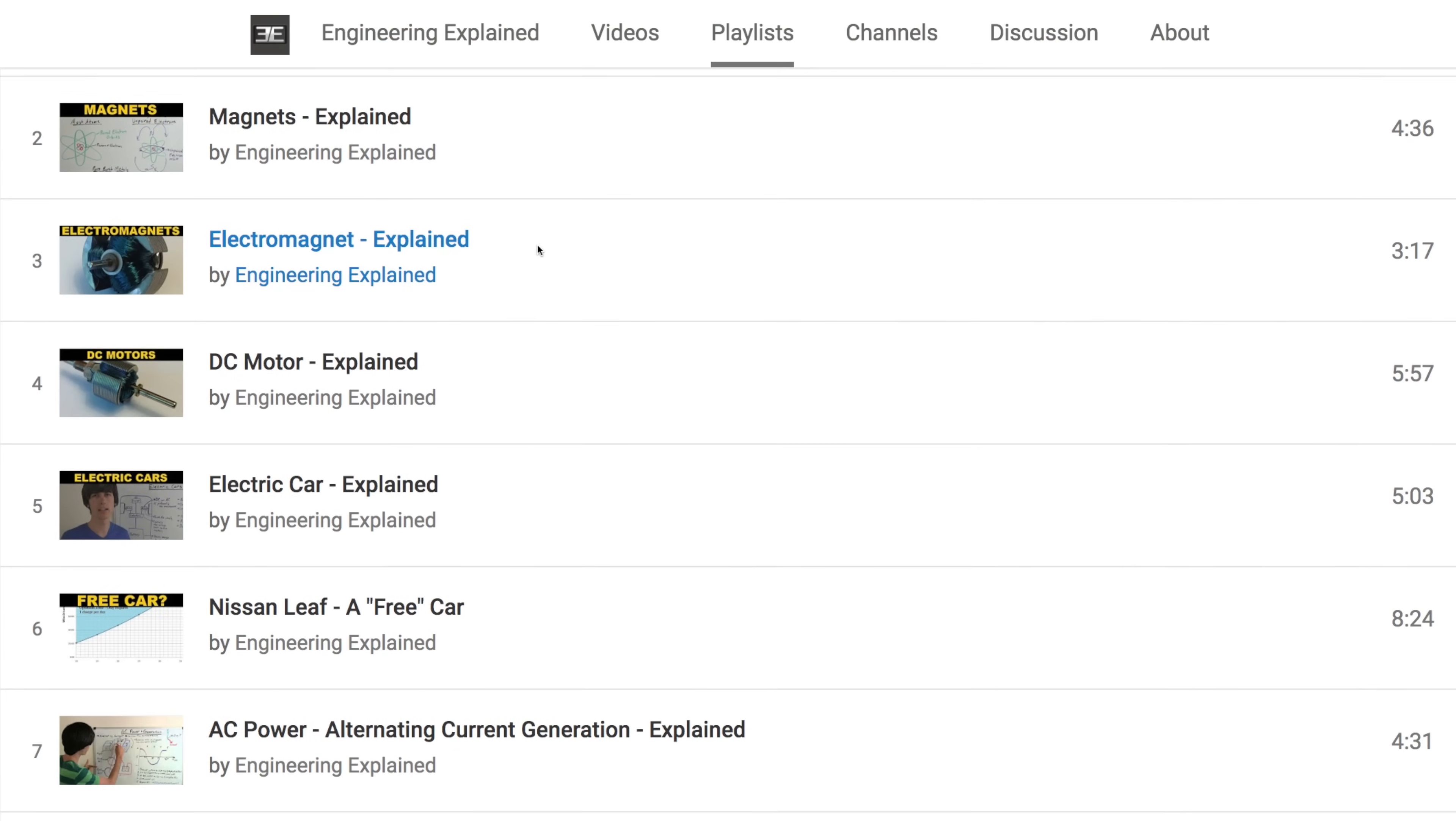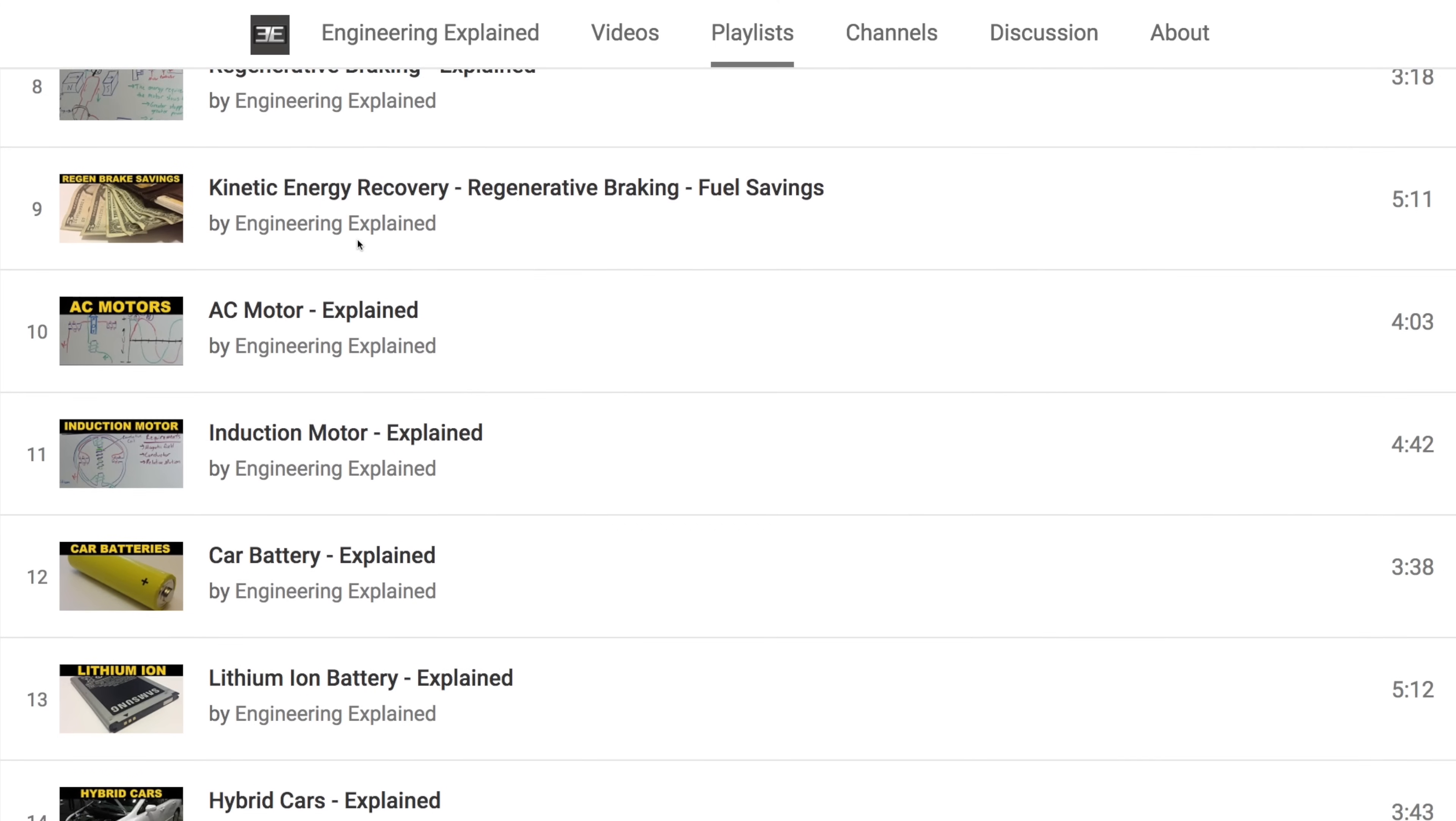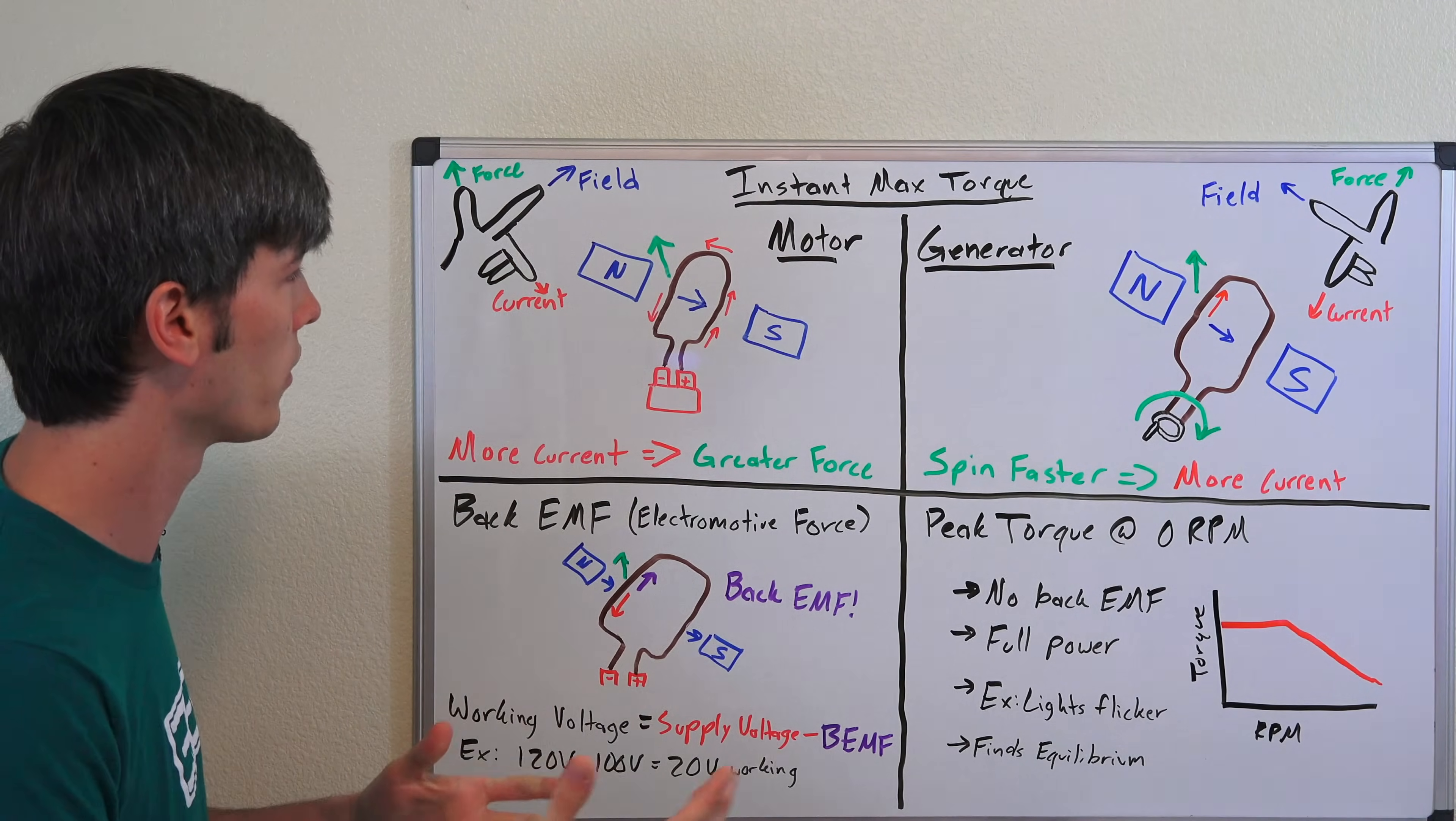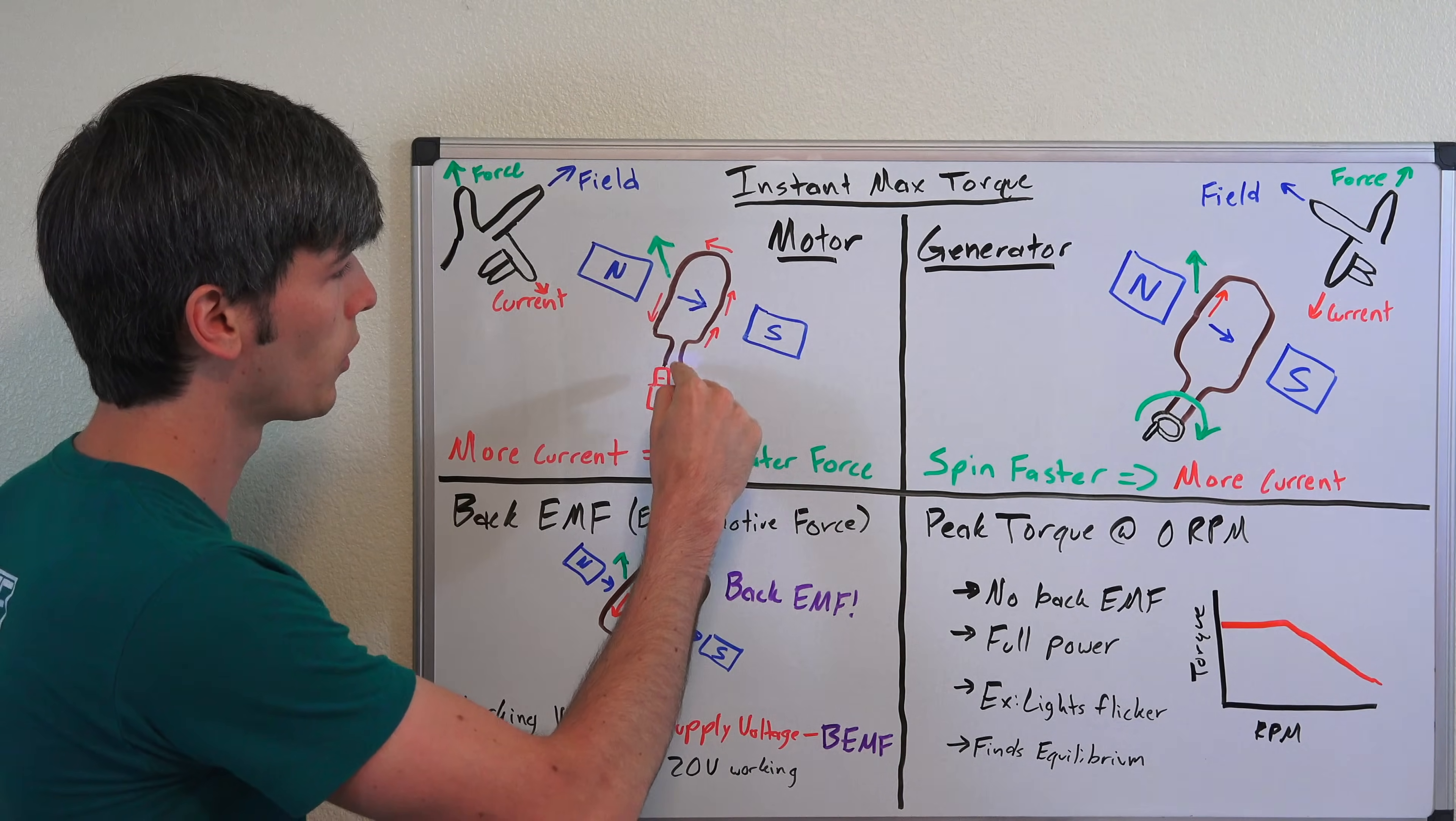If you haven't already, I have a bunch of different videos on how electric motors work. This is going to be a very generic overview, so if you want more details check out the links in the video description. Very basically, how a motor works is you supply a current through a wire which is going to be your motor.